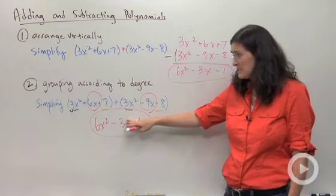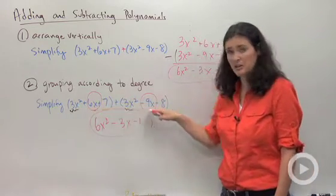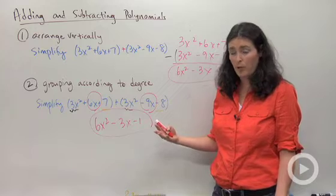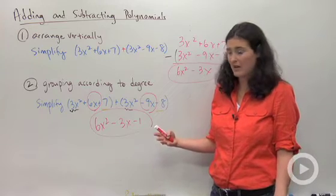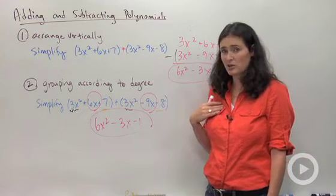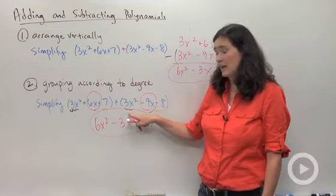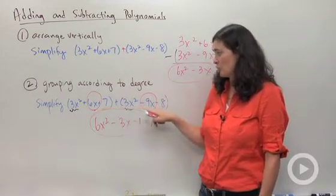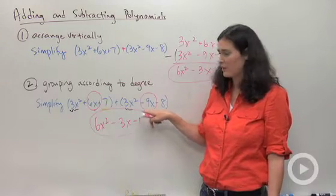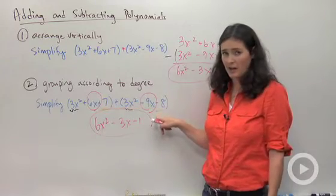Just be really careful when you're doing this method that you account for every single term in both your polynomials. You don't want to leave anybody out. I personally like to use color or different markings. Like you see I did brown squigglies on my x squared terms. I circled my regular x's in a different color, and I did underlinings for my constant terms.